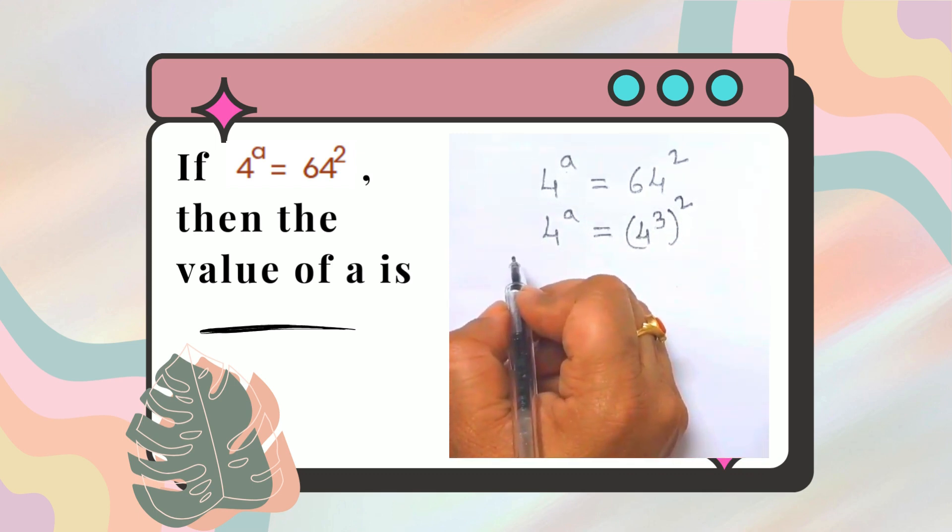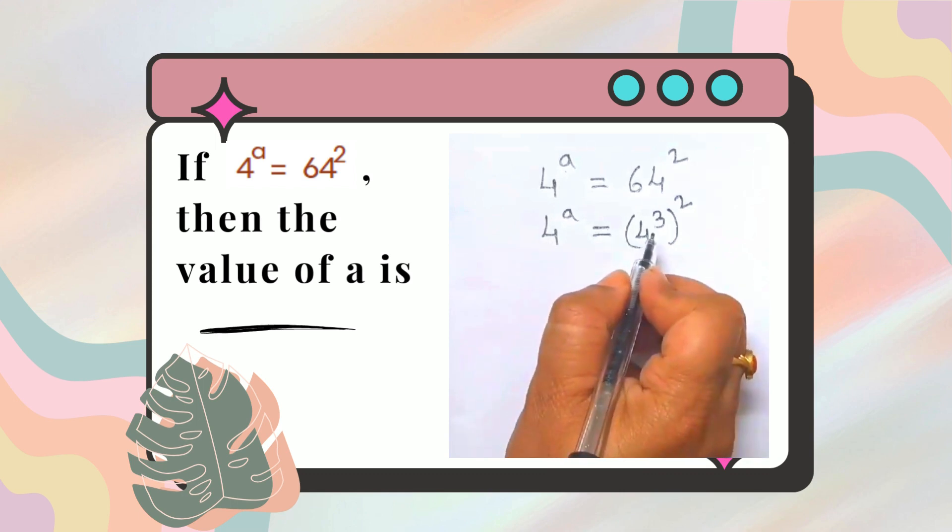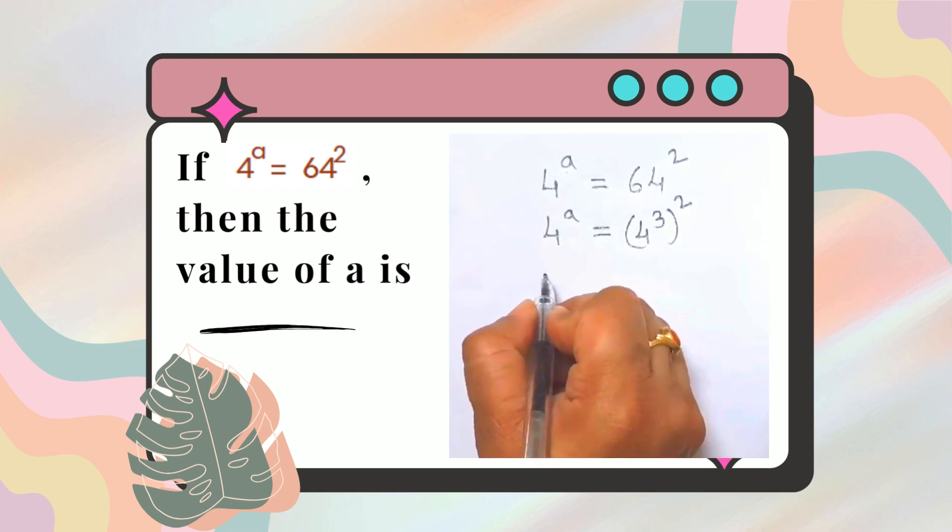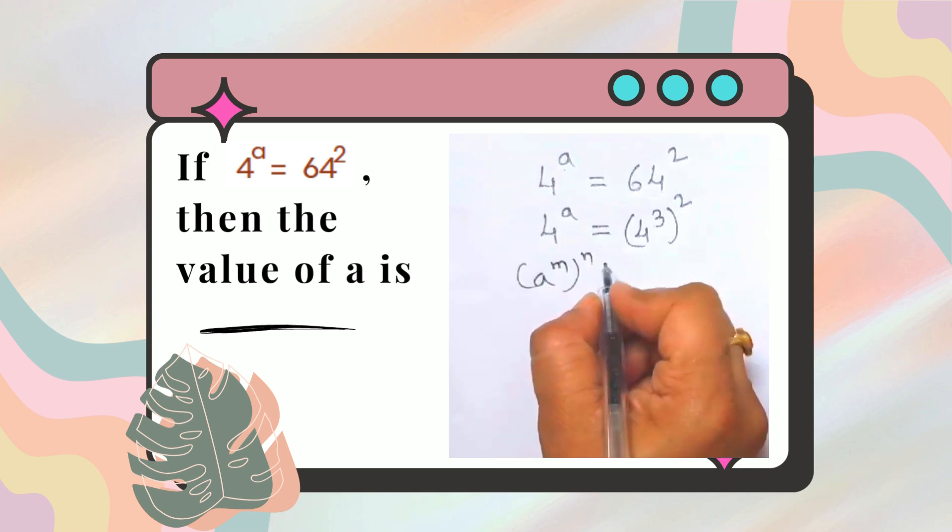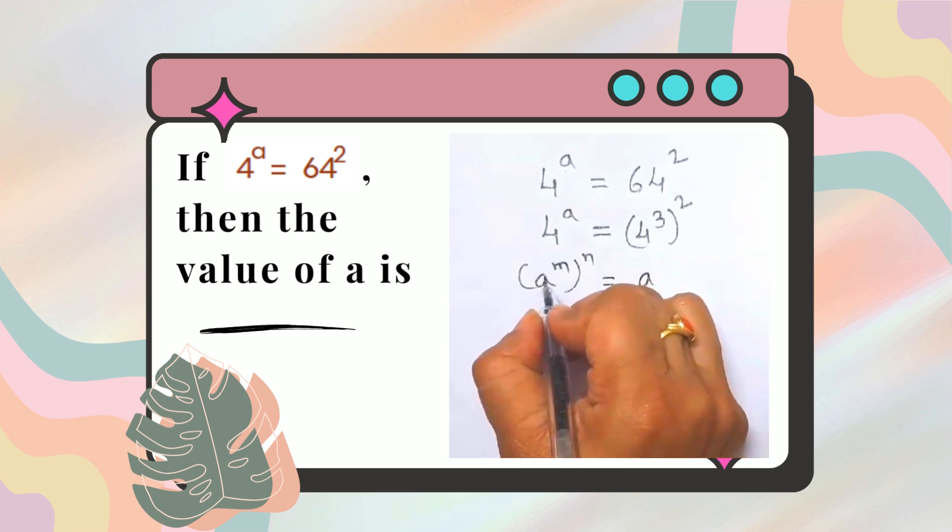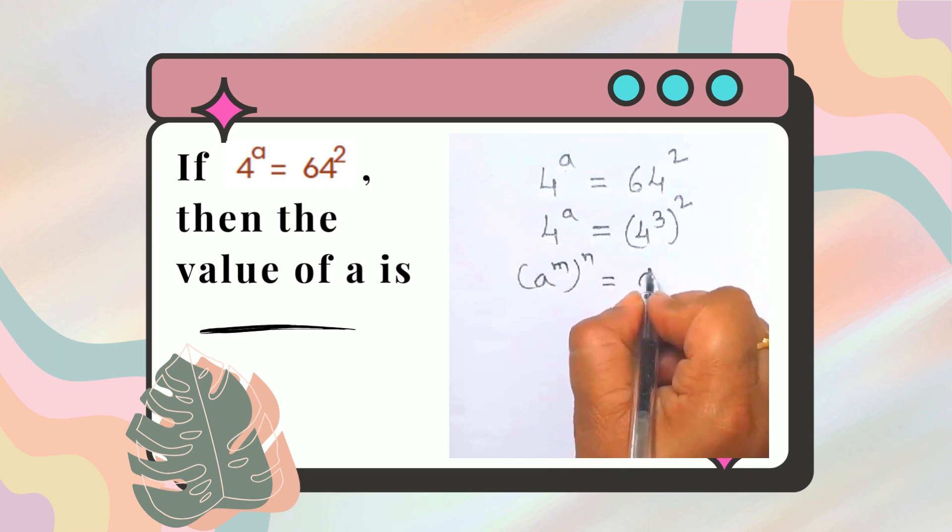Now by applying the power of power rule, what does power of power rule state? Power of power rule states that when you raise a power to another exponent, you multiply the exponents. So A to the power of M whole to the power of N will become A to the power of MN.